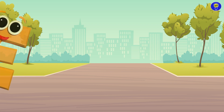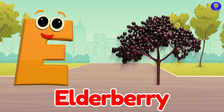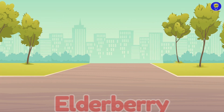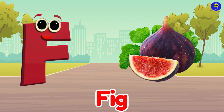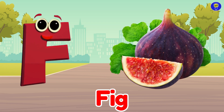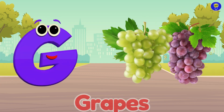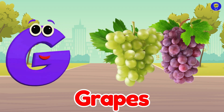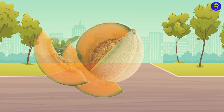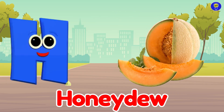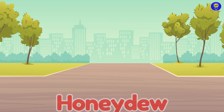E is for elderberry. Eh, eh, elderberry. F is for fig. Fuh, fuh, fig. G is for grapes. Guh, guh, grapes. H is for honeydew. Ha, ha, honeydew.